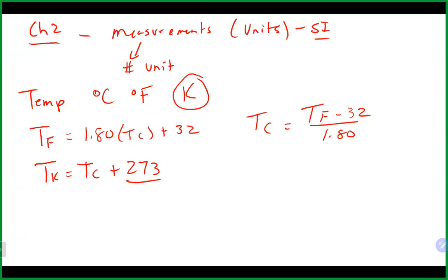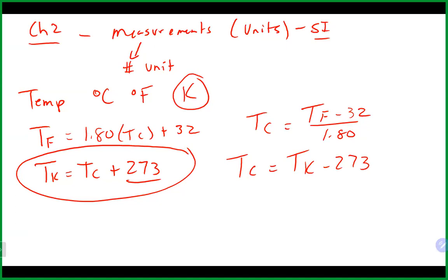If you have Kelvin and want Celsius, you subtract 273 from Kelvin. That is definitely the conversion we will use the most in chemistry. But you do need to know all those formulas and how to do all those conversions. If you wanted to go from Kelvin to Fahrenheit, you have to use most of those equations. You'd have to take it to Celsius and then Celsius to Kelvin in that sort of conversion chain.